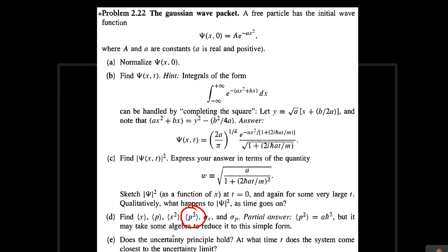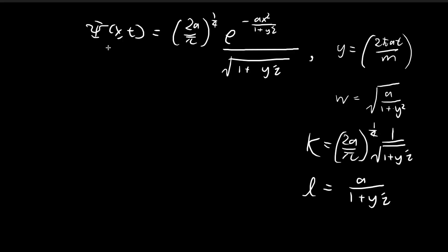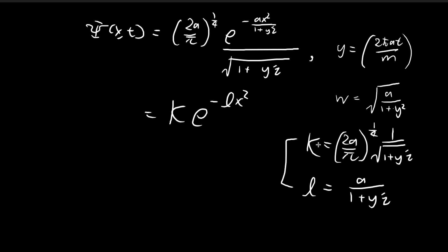We're going to find the expected value of p squared. Starting off with the wave function, I'm going to define all these symbols here just to save some time. Under all these symbols, our wave function can be rewritten as k times e to the power of negative lx squared, applying these two constants. This will save a lot of time when manipulating the wave function.